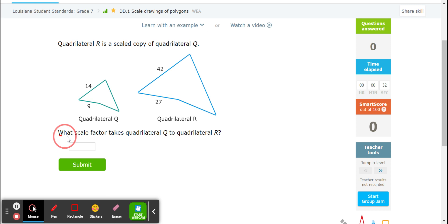So in these questions, they're going to ask us what is the scale factor. In order to find the scale factor, you have to be building a fraction. It doesn't matter which numbers you use. You can use the 42 and the 14, or you can use the 27 and the 9.